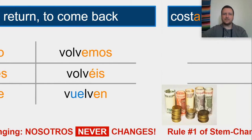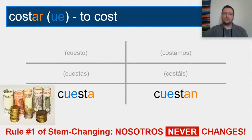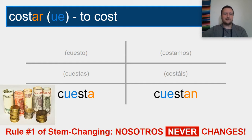One last one for the UE changers — costar, 'to cost.' Pause and write your verb tree, then unpause. The forms are: cuesto, cuestas, cuesta, costamos, costáis, cuestan. But because of the nature of the meaning of this verb, you'll probably never use cuesto, cuestas, or costamos. For example: me gusta la camiseta — ¿cuánto cuesta? I like the t-shirt, how much does it cost? Or: me gustan los zapatos — ¿cuánto cuestan? I like those shoes, how much do they cost?